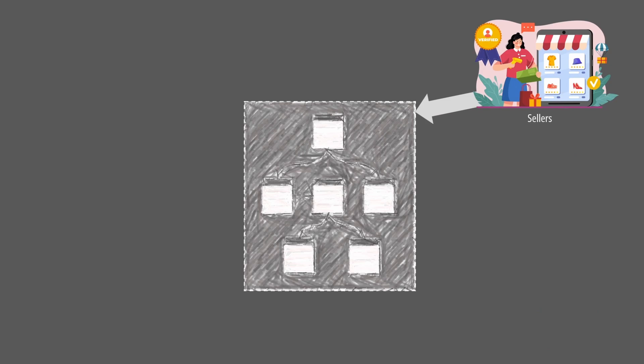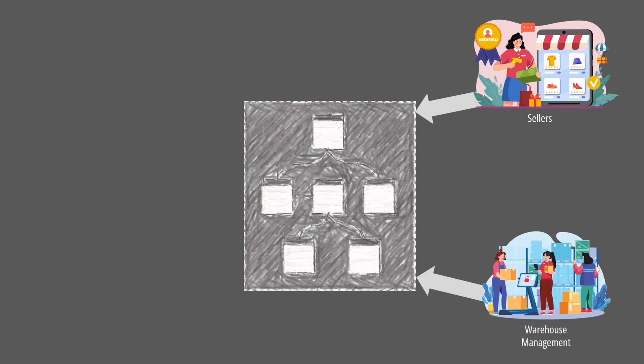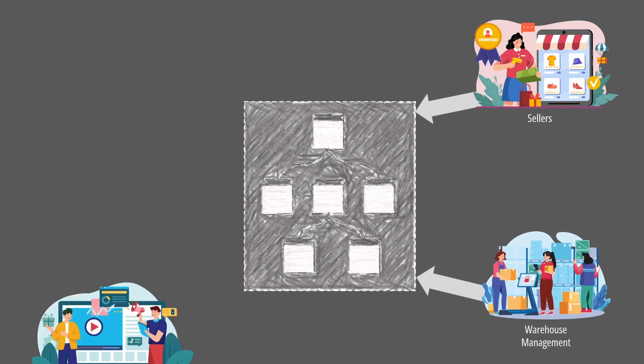But why would we want to do that? What are the benefits? Isn't it just added complexity? There are scenarios where optimizing a model for both reads and writes is very difficult, if not impossible. This is very common when different categories of users look at the system from different angles. In an online store, you have sellers managing product details, warehouses managing the product inventory, and marketing creating special offers.